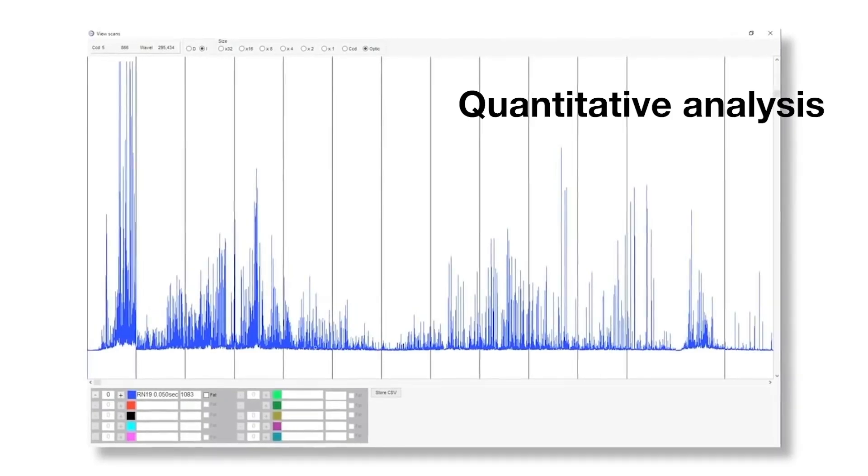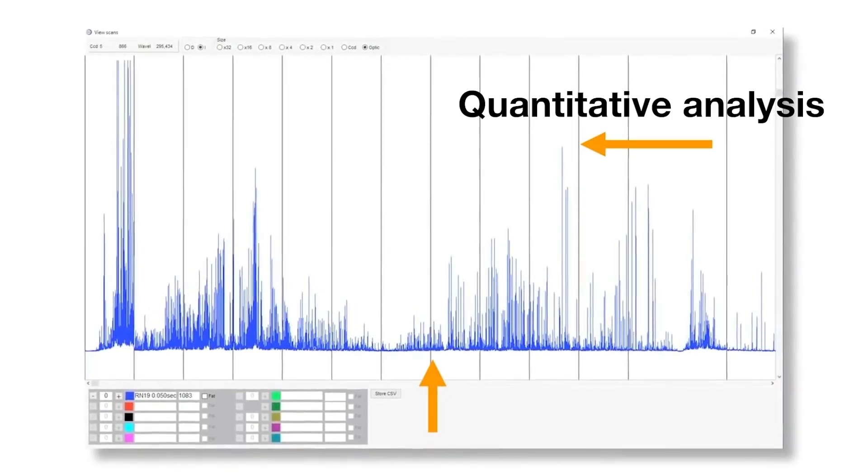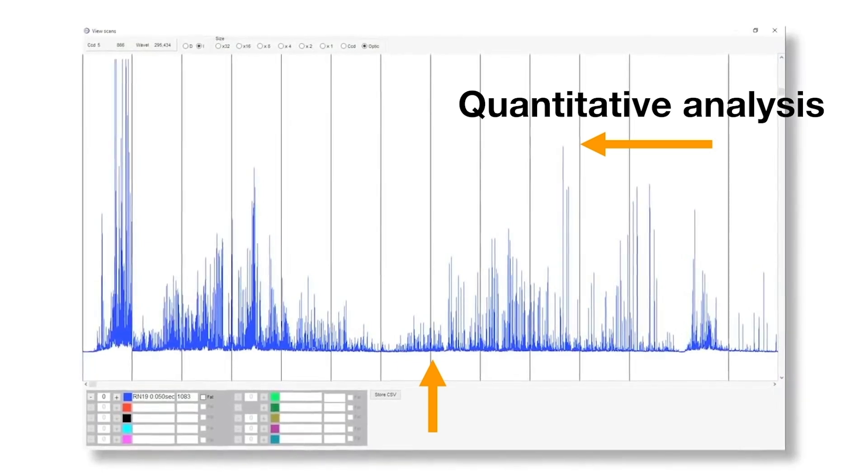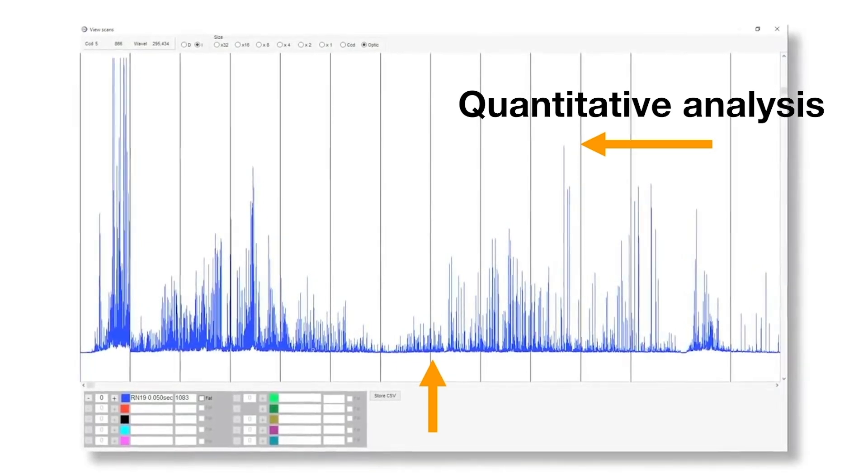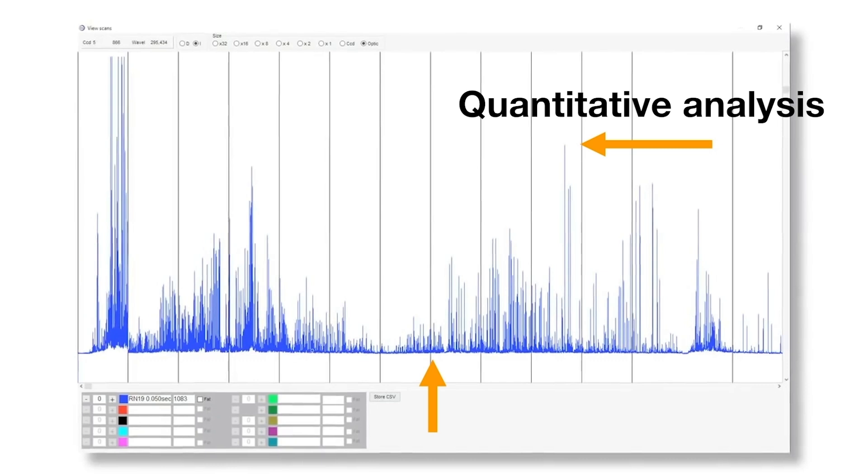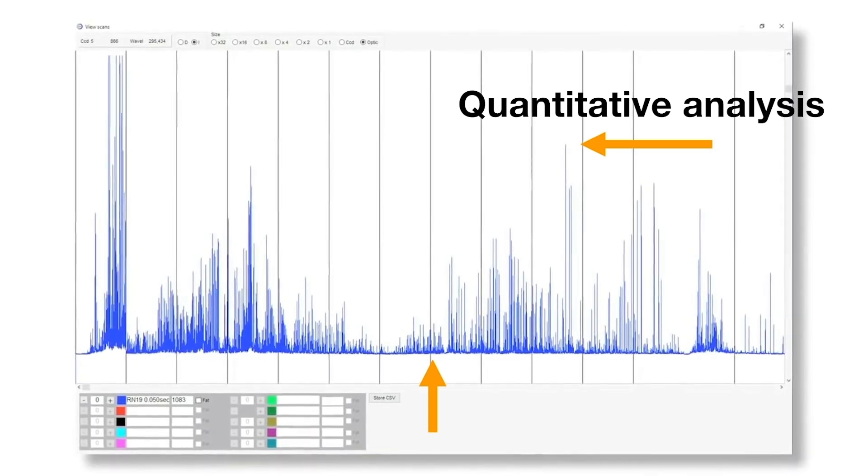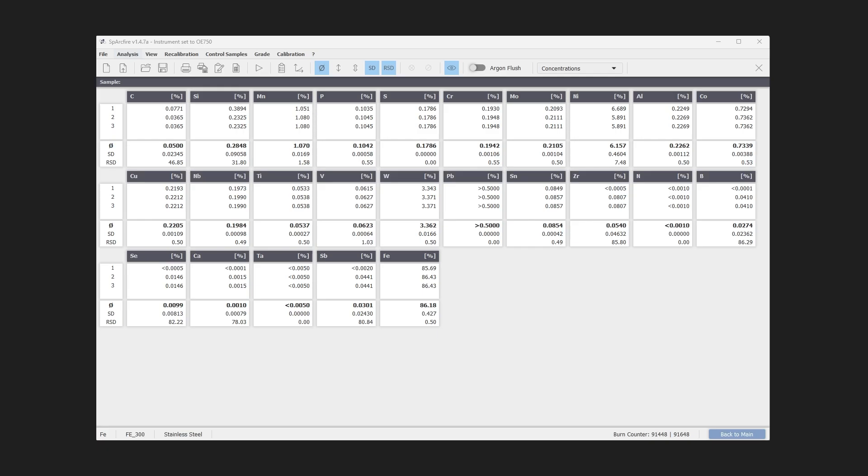However, OES is also a quantitative technique. As we can see, the peak wavelength identifies the element and its peak area or intensity gives an indication of its quantity in the sample. The analyzer then uses this information to calculate the sample's elemental composition based on a calibration with certified reference material.